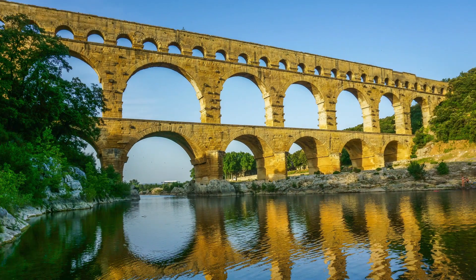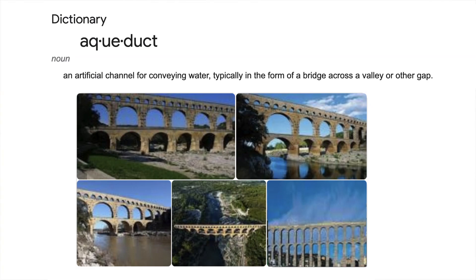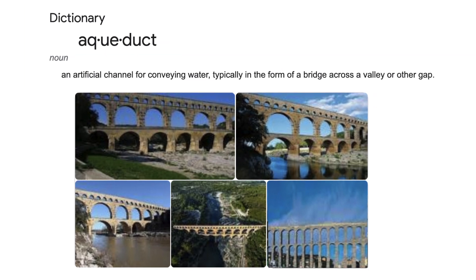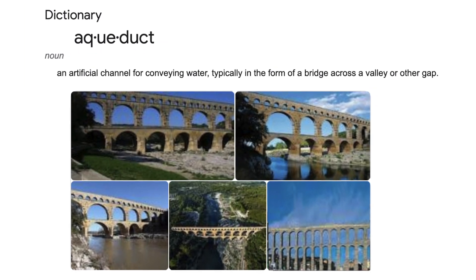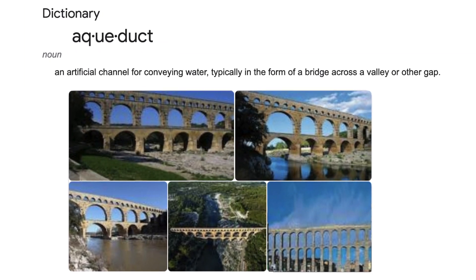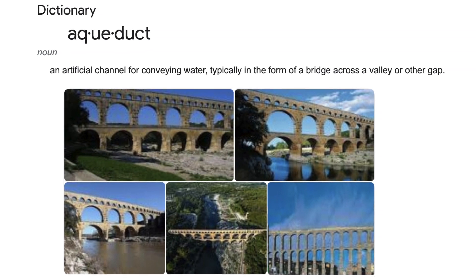Thousands of years ago, the Romans perfected transporting water from far away sources via aqueducts, which were channels built underground and sometimes more famously above ground to improve their quality of life with a steady supply of fresh water. The term aqueduct means to conduct water, which is what water pipelines do.